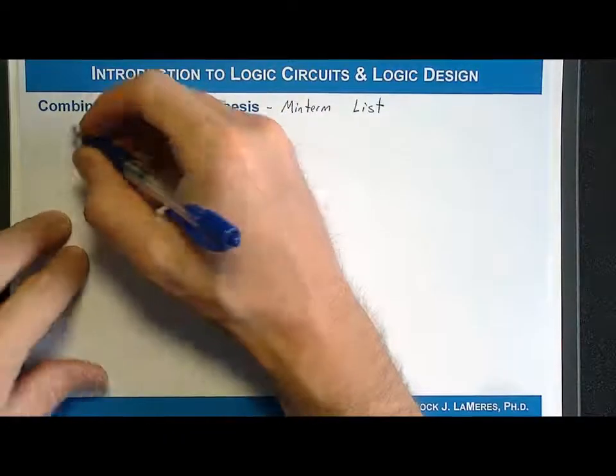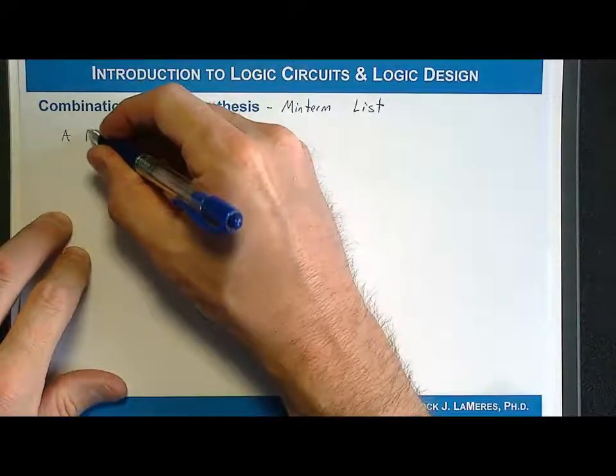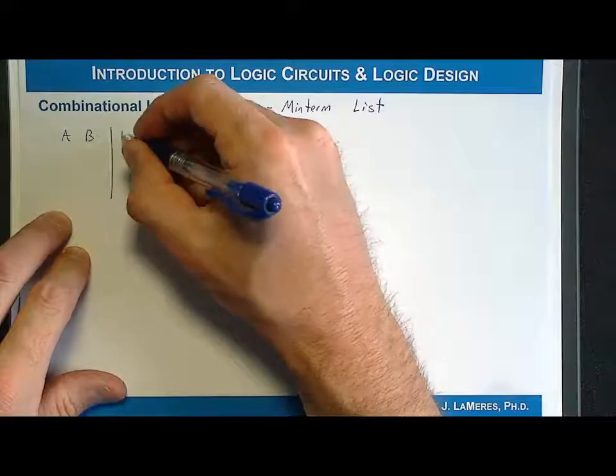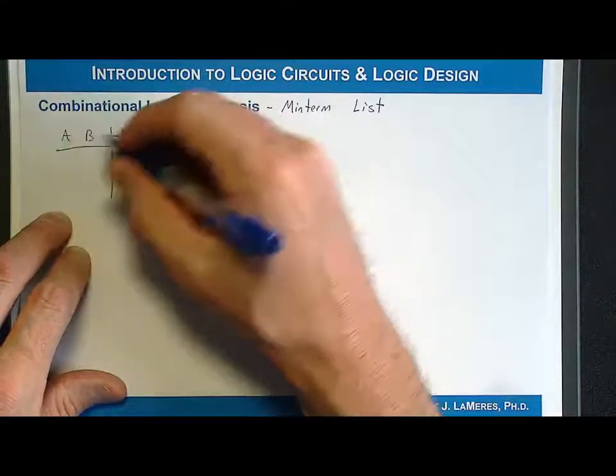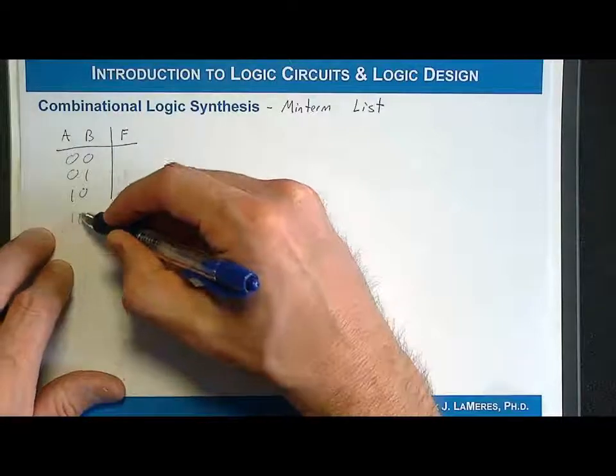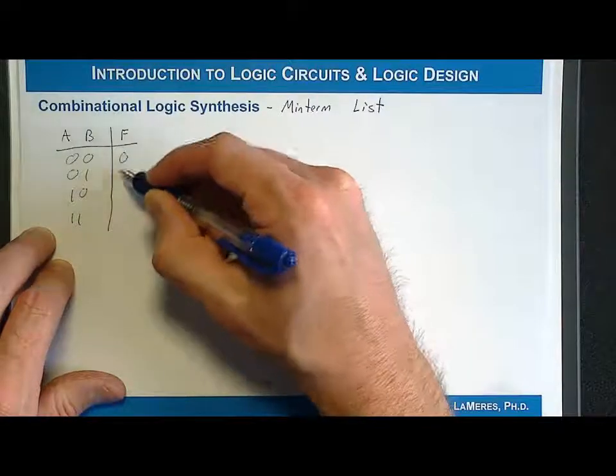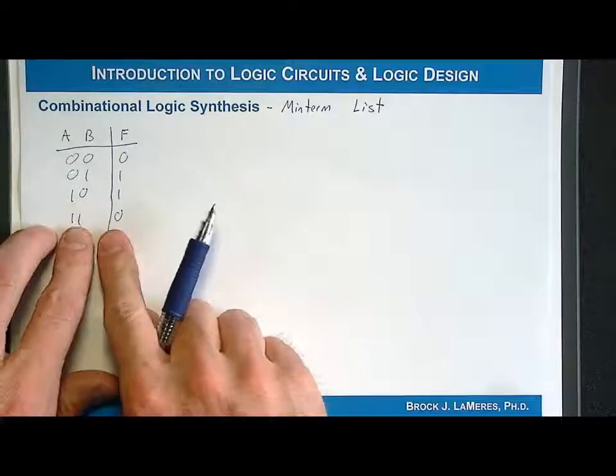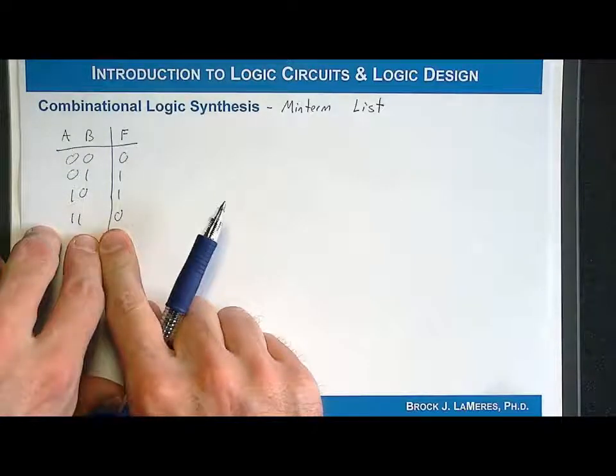As an example, let's say we had the truth table where we had two inputs, A and B, an output F, and let's say we had 0, 0, 0, 1, 1, 0, 1, 1, and the outputs were 0, 1, 1, 0. This is the truth table, the functional description of how the circuit operates.